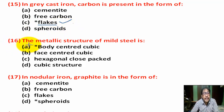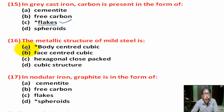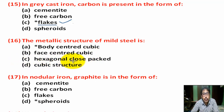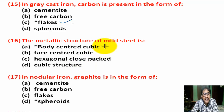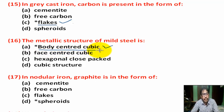Question number 16: The metallic structure of mild steel is — Option A: body-centered cubic. Option B: face-centered cubic. Option C: hexagonal close-packed. Option D: cubic structure. Correct answer is Option A — body-centered cubic.